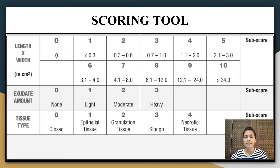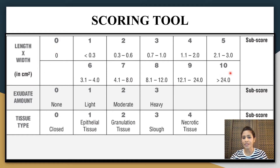So this is the scoring tool. Here, three things we need to note. The first one is length and width of the pressure ulcer. We have to measure the length as well as the width and multiply them to get an area. The main score ranges from 0 to 10. For example, if your answer is 15, then 15 lies between 12.1 to 24.0, so you have to give a main score of 9.